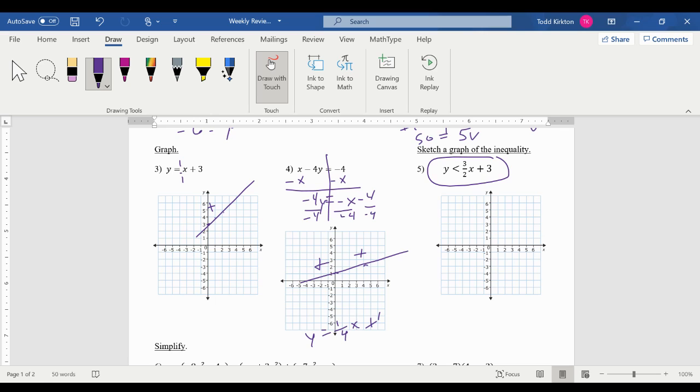Sketch the graph of the inequality. The fact there's no equal sign means it's going to be a dashed line. So I just go ahead and graph my line and put a point at 3. And then I go up 3 over 2, dashed. And then the less than means I'm shading below the line.